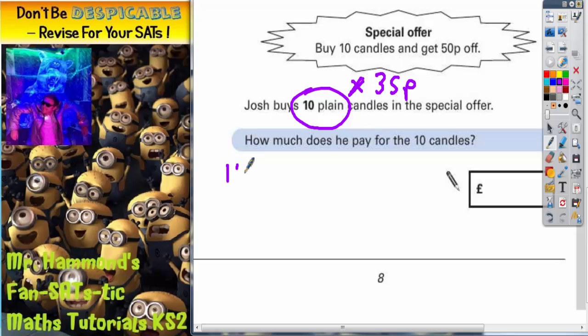Well ten times by thirty-five pence is going to be nice and easy. That's going to be three pound fifty, or three hundred and fifty pence if you like, and then turn that into three pound fifty.